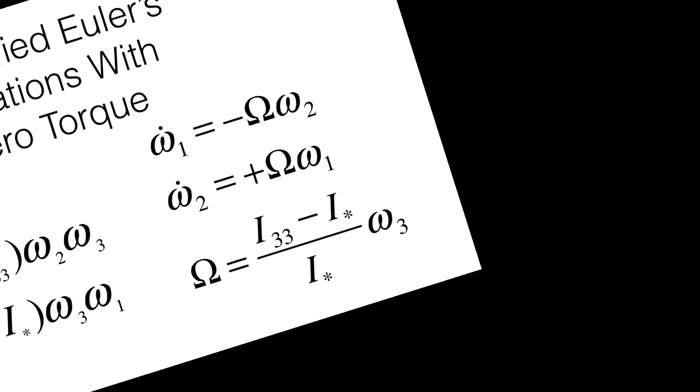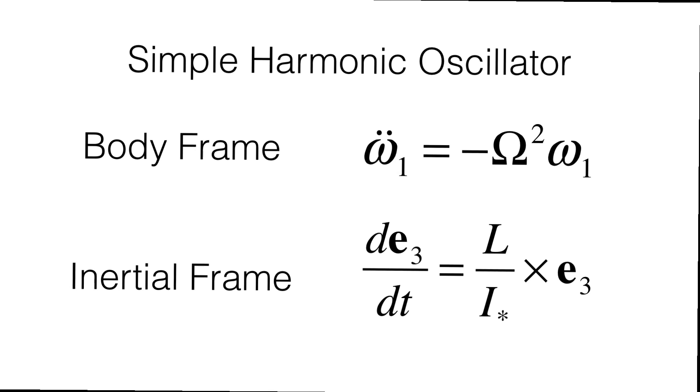Next, differentiating the first resulting equation and then using the second, we get the equation for a simple harmonic oscillator. This is a great result and is exactly as we expected. Since we are in the body frame, this implies that the omega processes about the symmetry axis E3 with angular frequency capital omega.